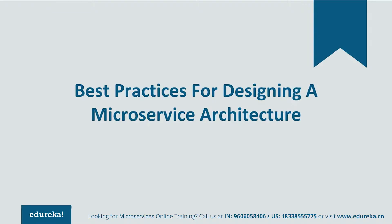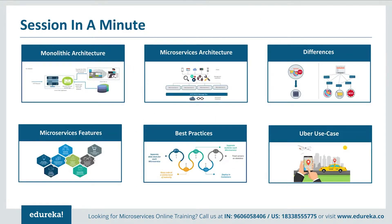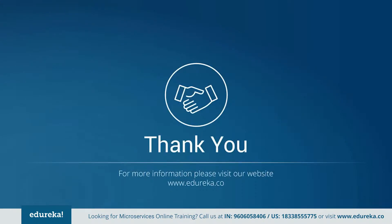Now that we've seen the Uber use case, let's look at best practices to design microservices: separate the data store for each microservice; keep the code at a similar level of maturity; separately build each microservice according to its respective features and deploy into containers; and create servers as stateless for communication. To summarize, we covered monolithic architecture and its challenges, the microservices architecture and the differences between both, the features of microservices and best practices to design them, and compared Uber's previous framework to the present one. Thank you for watching and have a great day.